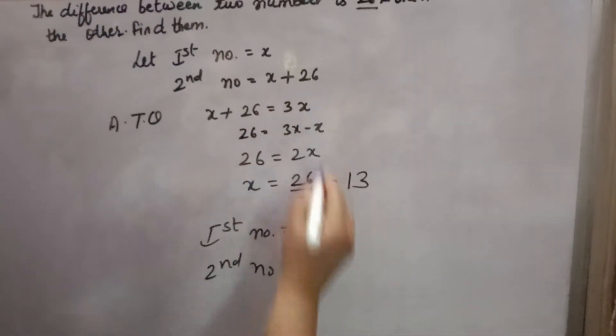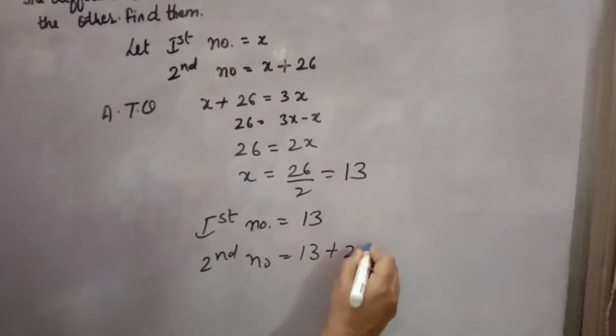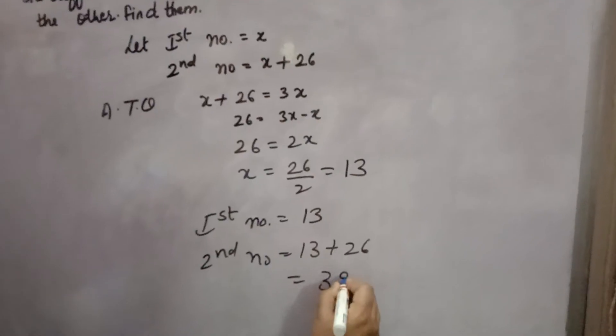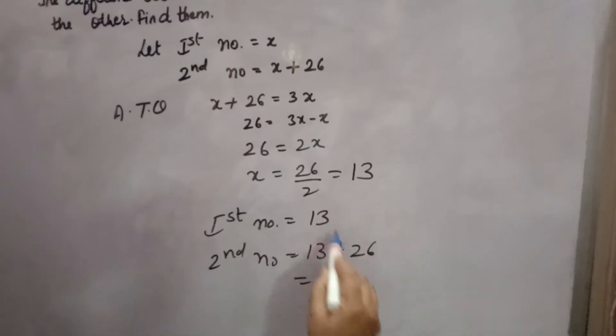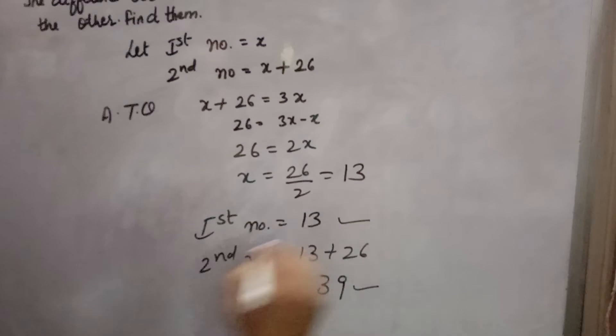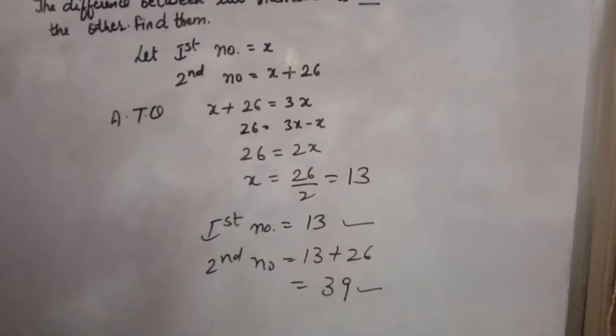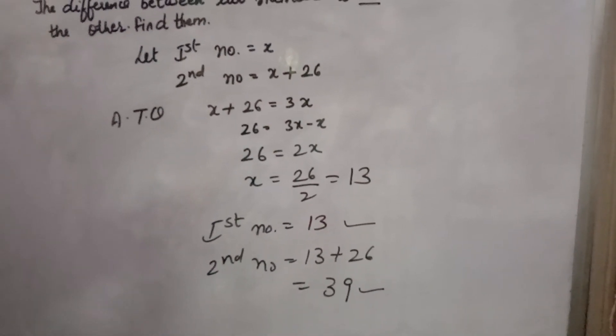You can check that this number 39 is 3 times 13, that means your answer is correct. Thank you.